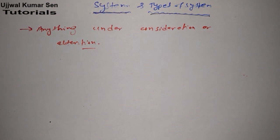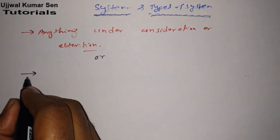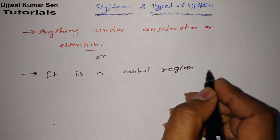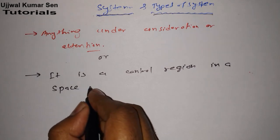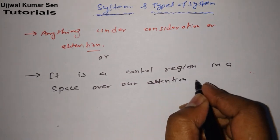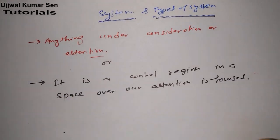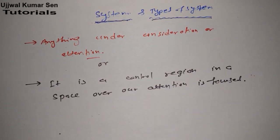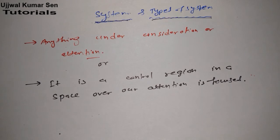Another definition of system is: it is a control region in space over which our attention is focused. These are two definitions — you can remember either one. If you are preparing for a university examination, this topic is important and you can get long as well as short questions. For competitive examinations, this is good for understanding basics, but most questions come from topics like the first law of thermodynamics and steady flow energy equation.